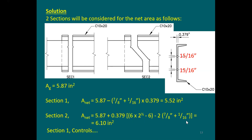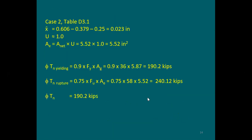When it comes to analysis, I have two cross-section areas I'm going to be working with. One of them is going to be for the yielding limit state — just take 587. The other one is going to be for the rupture limit state — I'm going to be using 552 here.